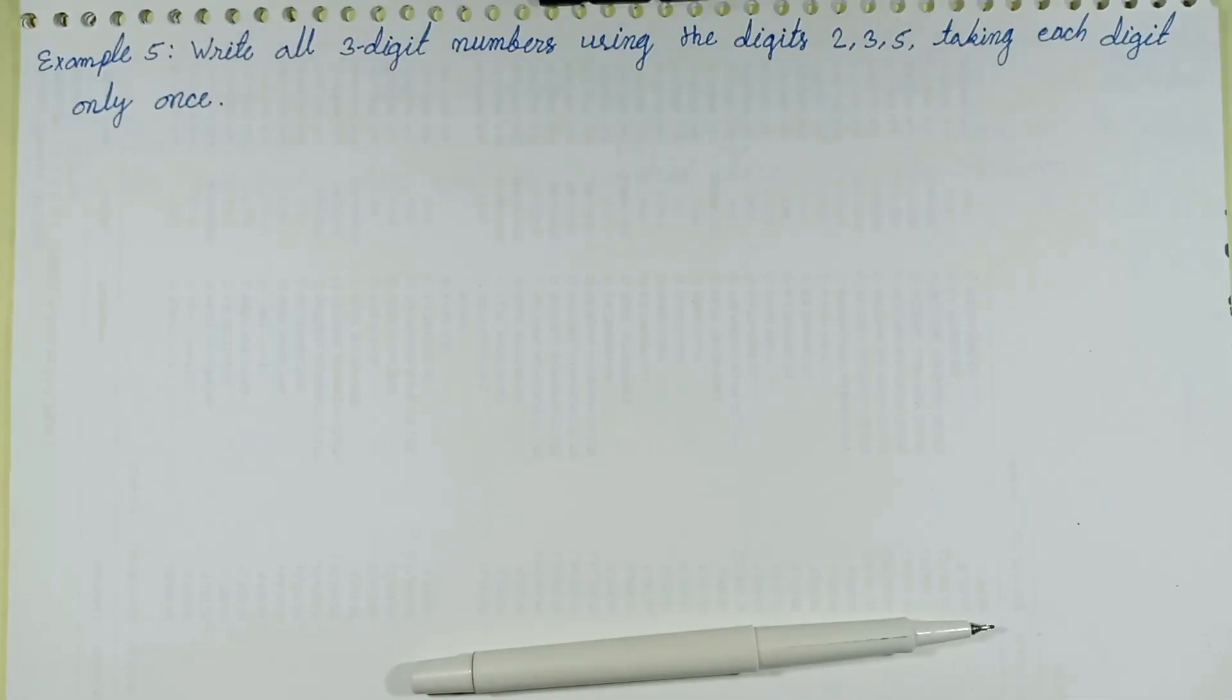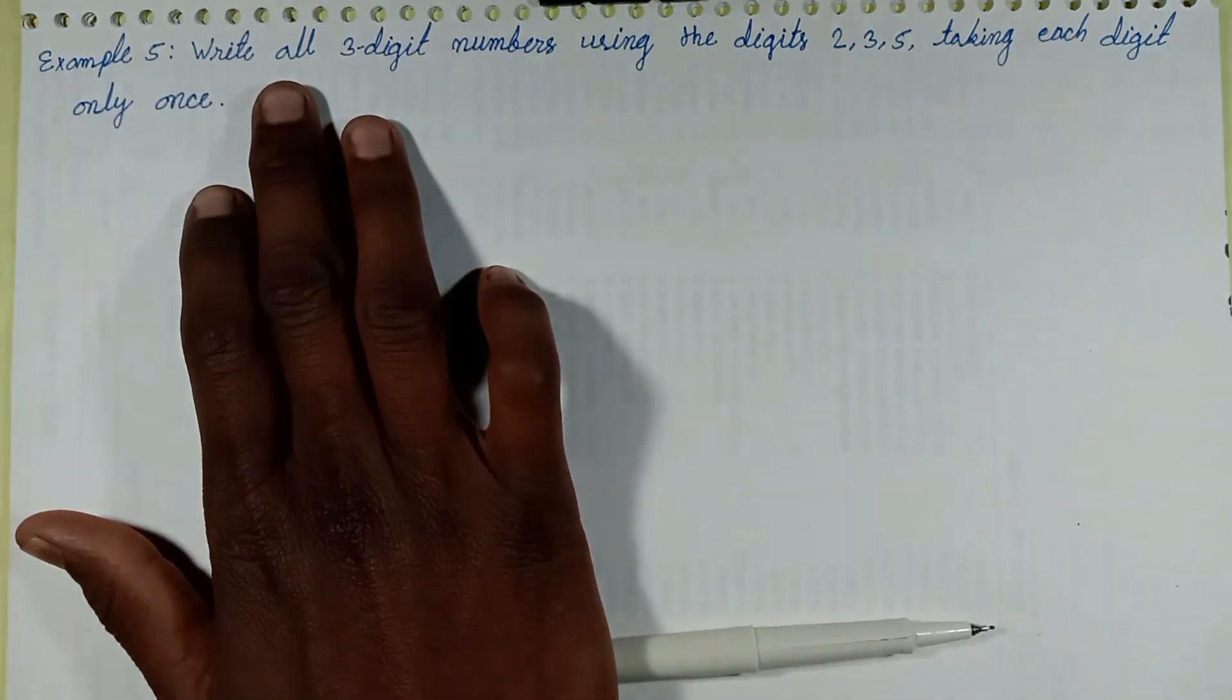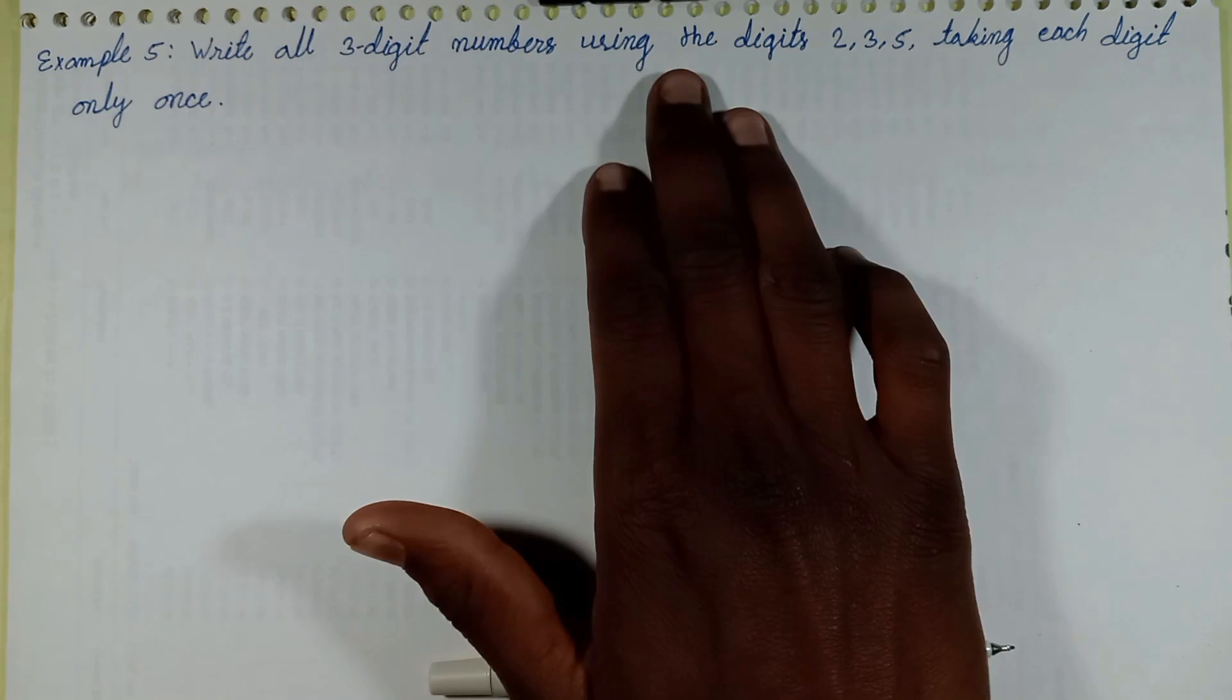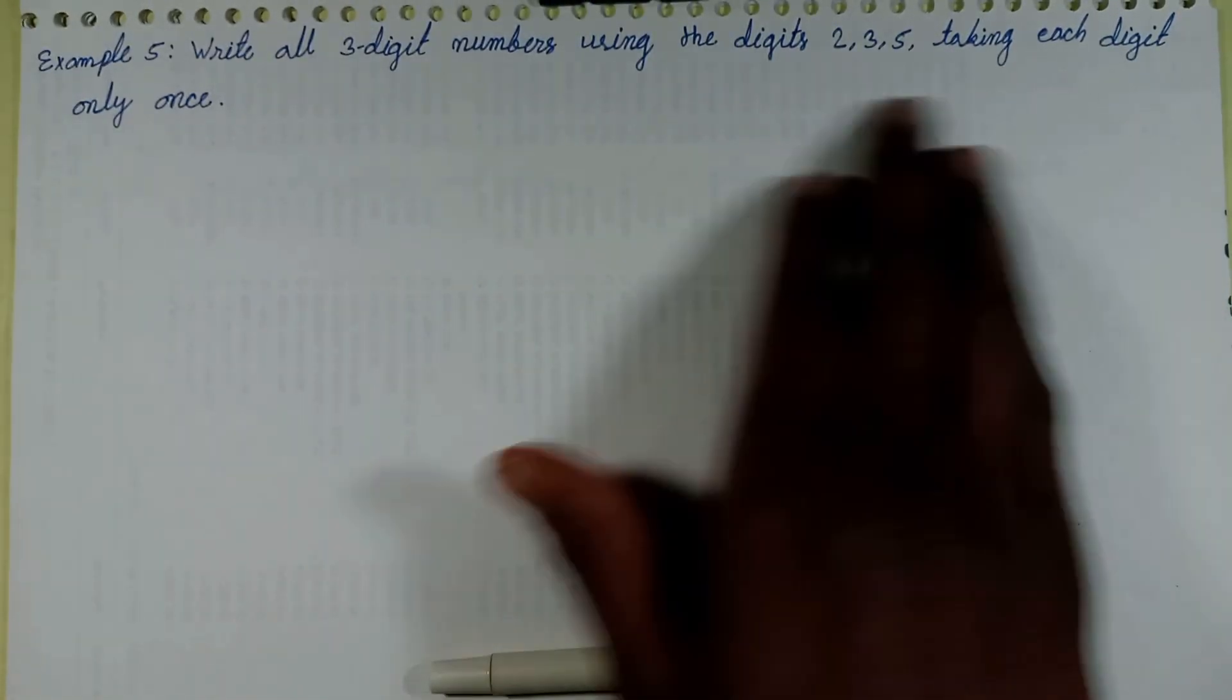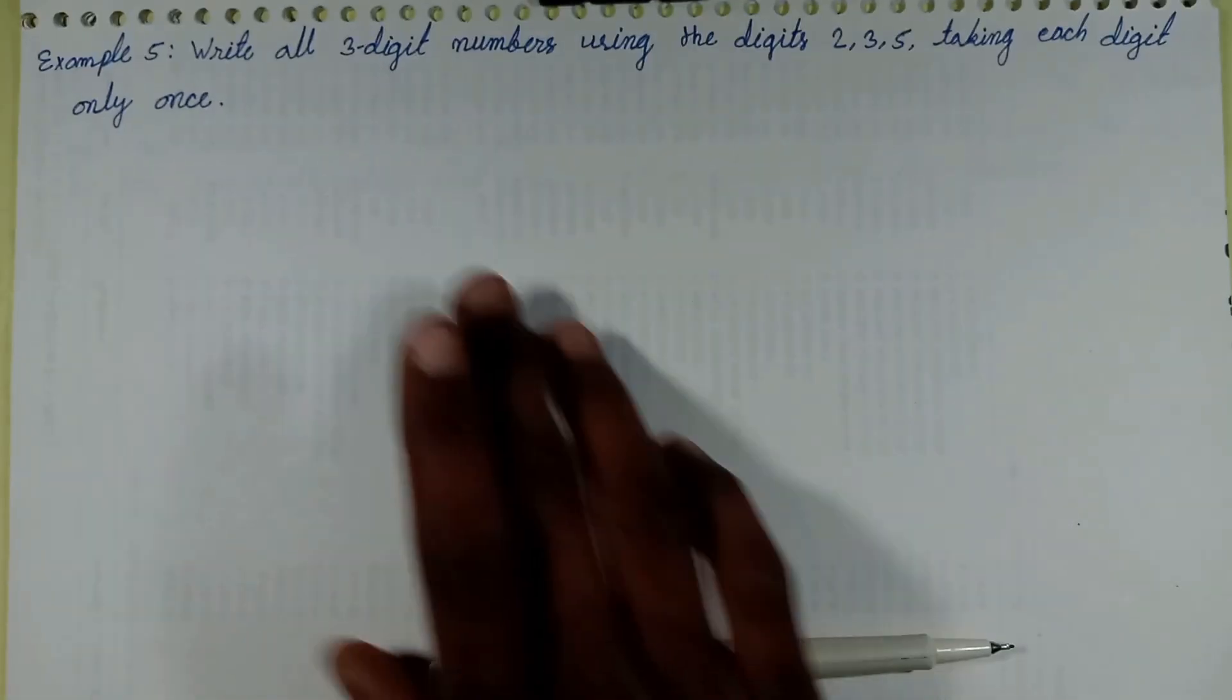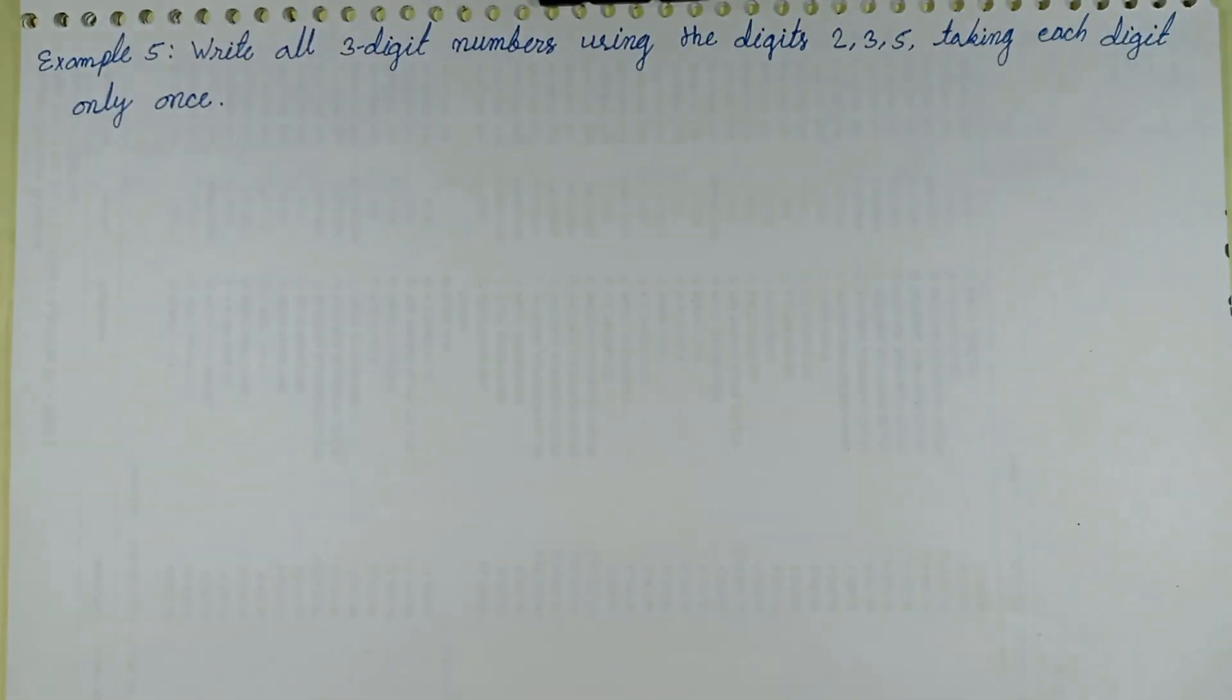Bande Matram everyone, welcome back to a new episode. Today's episode discusses Example 5: Write all three-digit numbers using the digits 2, 3, 5, taking each digit only once. Let's discuss in more detail.